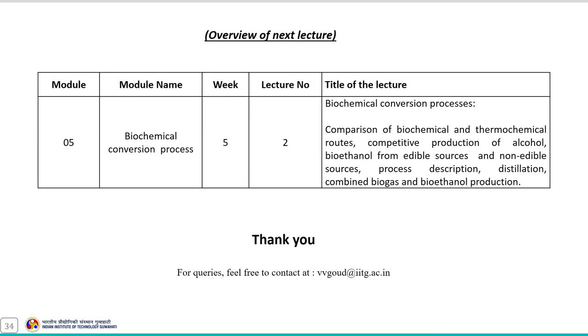This covers our discussion on the anaerobic digestion process. In the next lecture — the second lecture of module 5 — we will discuss another biochemical conversion process: alcoholic fermentation. Topics will include comparison of biochemical and thermochemical routes, competitive production of alcohol, bioethanol from edible and non-edible sources, process description, distillation, and the concept of combined biogas and bioethanol production. Thank you.